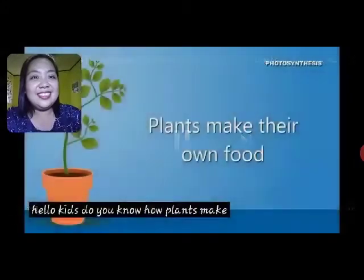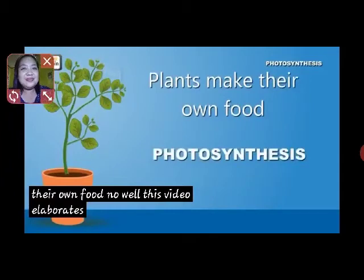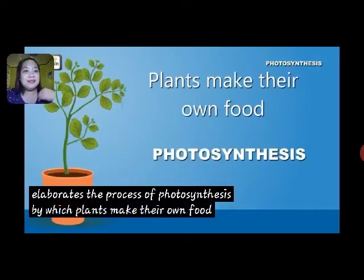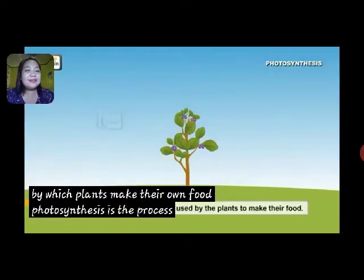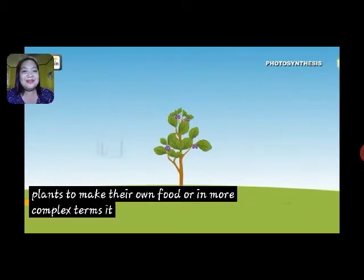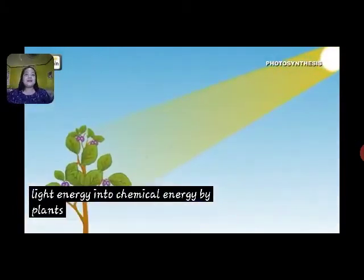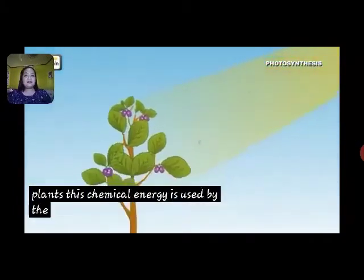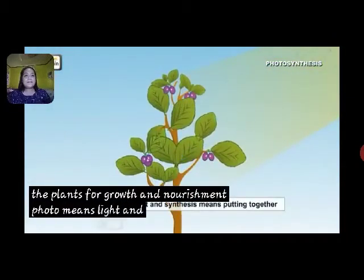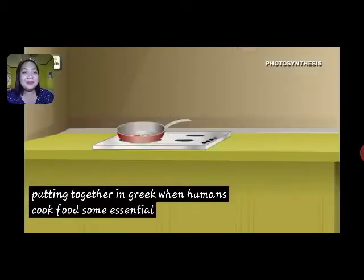Do you know how plants make their own food? Well, this video elaborates the process of photosynthesis by which plants make their own food. Photosynthesis is the process used by plants to make their own food — or in more complex terms, it is the conversion of light energy into chemical energy by plants. This chemical energy is used by the plants for growth and nourishment. Photo means light and synthesis means putting together in Greek. When humans cook food, some essential things are required.